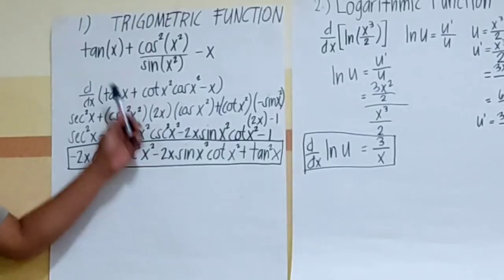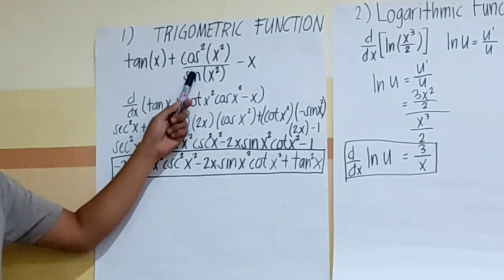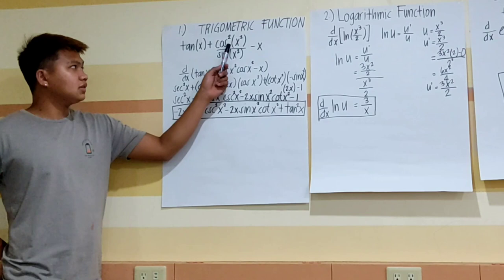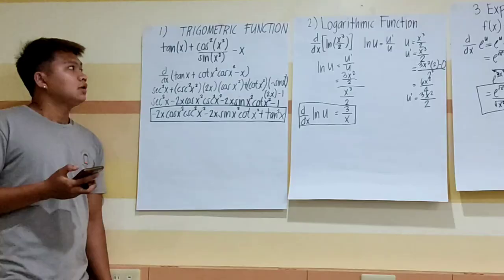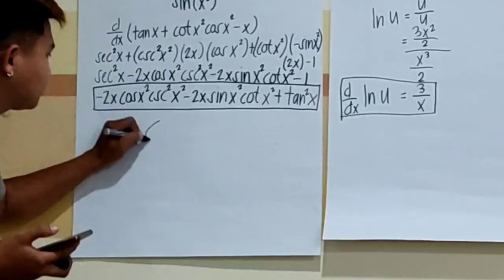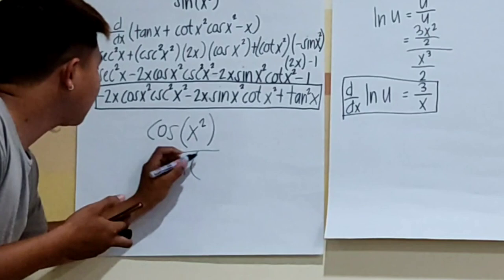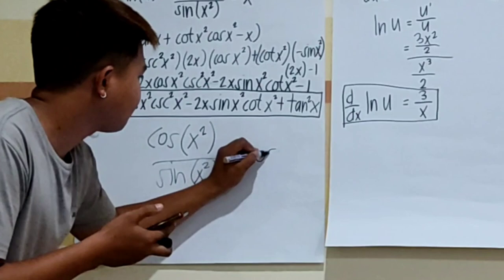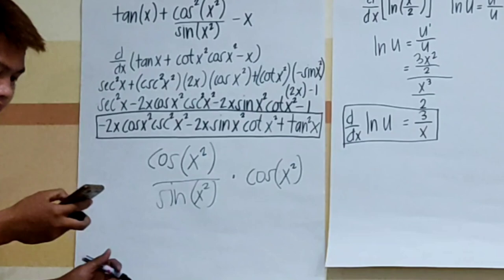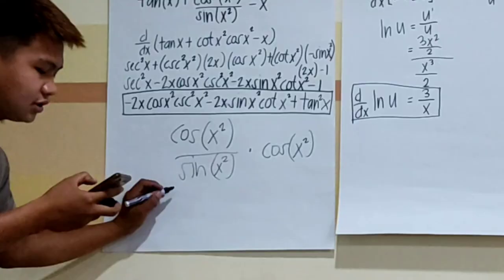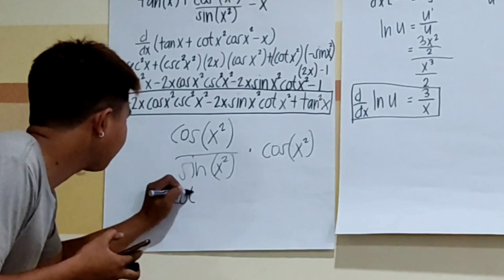The expression is tan(x) plus cos²(x²) all over sin(x²) minus x. First, we need to simplify cos²(x²) all over sin(x²). We rewrite cos²(x²) over sin(x²) as cos(x²) over sin(x²) times cos(x²), and cos(x²) over sin(x²) is tangent x², so we get tangent x² times cos(x²).